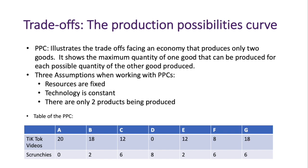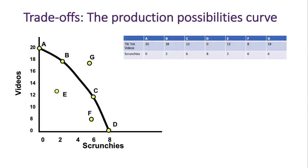Here on the table, if we were a country producing only two goods, we'd be producing TikTok videos and scrunchies. At each different point we can see some amount of each. For point A, we are producing 20 TikTok videos and zero scrunchies. Point B is 18 TikTok videos and two scrunchies. That's a PPC table. We then take that information and graph it out — on the vertical axis we have TikTok videos, on the horizontal axis we have scrunchies, with each point represented on the graph.